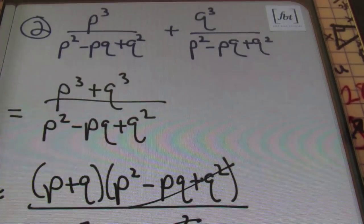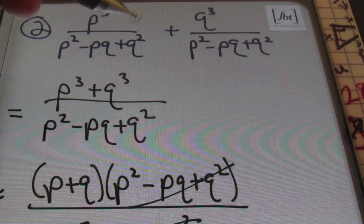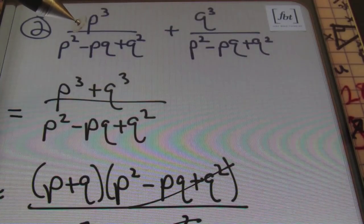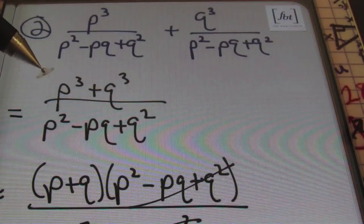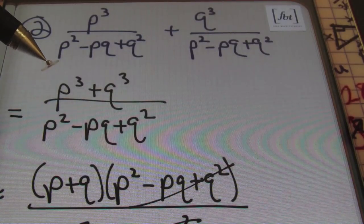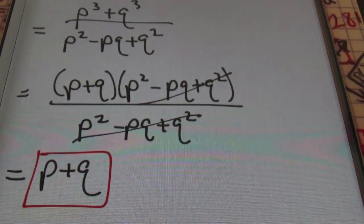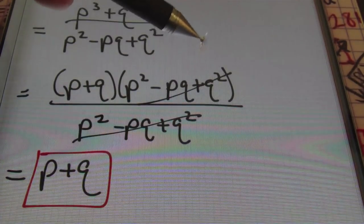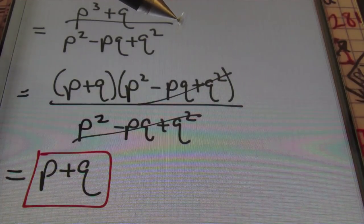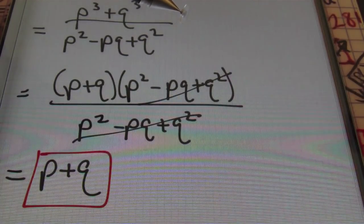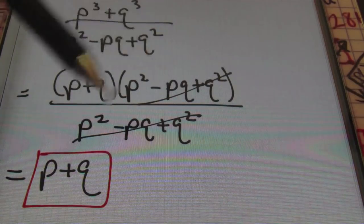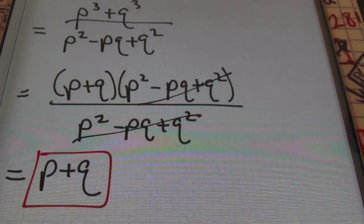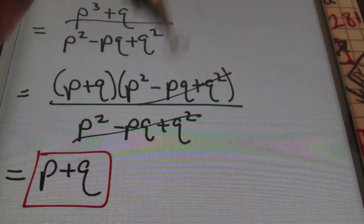So what happened from the beginning? We started out recognizing that our denominators were the same. Being as though that's the case, we combined the numerators and ended up with a sum of cubes. We factored that sum of cubes into p plus q times p squared minus pq plus q squared, using the factoring pattern for a sum of cubes. Once I did that, I went ahead and canceled that out, and that left me with p plus q. Let's move on to the next problem.